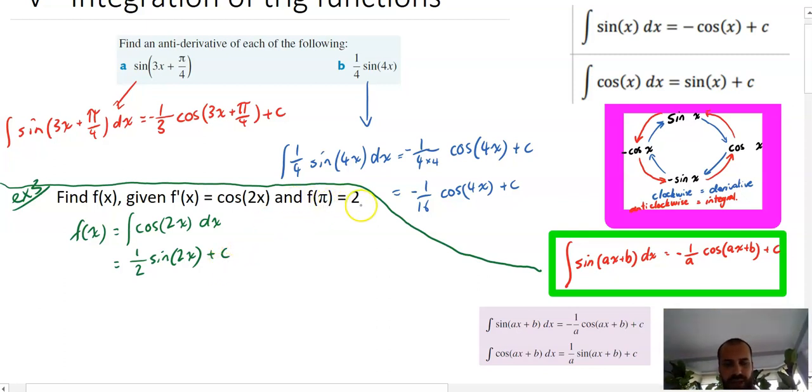And now we need to figure out what that plus c is and we can do it by putting pi and 2 in for x and y. Okay, so we'll say that 2 equals half sine 2 times pi plus c.